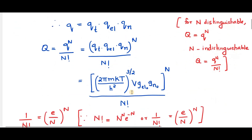In our previous videos we have already evaluated the individual partition functions. The translational partition function QT is (2πmKT / h²)^(3/2) × V. For the electronic and nuclear partition functions, these are equal to the degeneracy of the electronic and nuclear energy states: QEL = G_EL and QN = G_N. So substituting the values for individual partition functions, we get [(2πmKT / h²)^(3/2) × V × G_EL0 × G_N0]^N / N!.